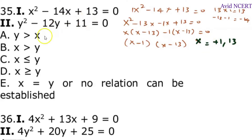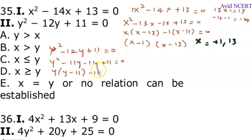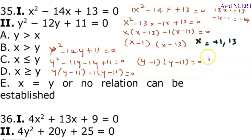Now, to find y, which is y square minus 12y plus 11 equals 0. Same thing here: 11 times 1 is 11, minus 11y minus 1y. So, y square minus 11y minus 1y plus 11 equals 0. Taking the common term out: y into y minus 11, minus 1 into y minus 11 equals 0. So, y minus 1 and y minus 11 equals 0, which means y equals 1 or 11.